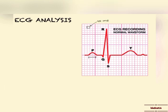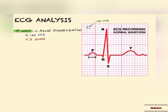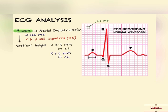Starting with the P wave — this represents atrial depolarization and it should be less than 120 milliseconds, meaning less than three small squares. Regarding vertical height, it should be less than 2.5 millimeters in limb leads and less than 1.5 millimeters in chest leads.